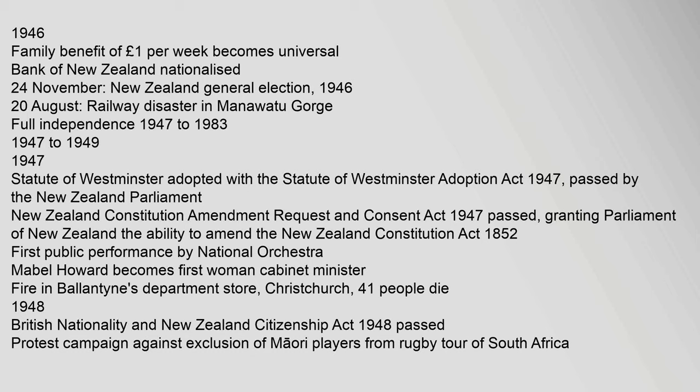1946: Family benefit of £1 per week becomes universal. Bank of New Zealand nationalised. 24 November: New Zealand general election. 1946, 20 August: Railway disaster in Manawatu Gorge. Full independence, 1947–1983. 1947: Statute of Westminster adopted with the Statute of Westminster Adoption Act 1947 passed by the New Zealand Parliament. New Zealand Constitution Amendment Act 1947 passed, granting Parliament of New Zealand the ability to amend the New Zealand Constitution Act 1852. First public performance by National Orchestra. Mabel Howard becomes first woman Cabinet Minister. Fire in Ballantine's Department Store, Christchurch — 41 people die.